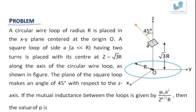A square loop of side a, where a is given as much much lesser in comparison to capital R, having two turns, so this has got two turns, is placed at its center at Z equal to root 3R, so this distance is root 3R along the axis of the circular wire loop as shown in the figure.